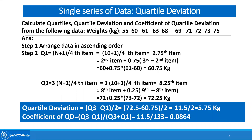Let's understand this with an example. Calculate Quartile, Quartile Deviation, and Coefficient of Quartile Deviation from the following data. These are the data of a few people whose weights are given in kilograms. The first step is to arrange the data in ascending or descending order — normally we prefer ascending order. In this particular data set, the data is already arranged from smaller to larger, i.e., in ascending order.